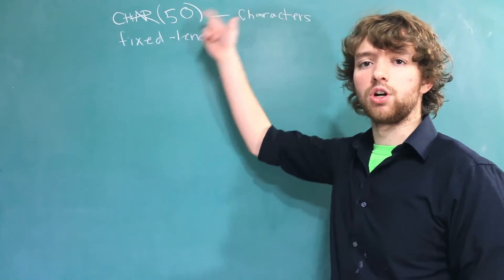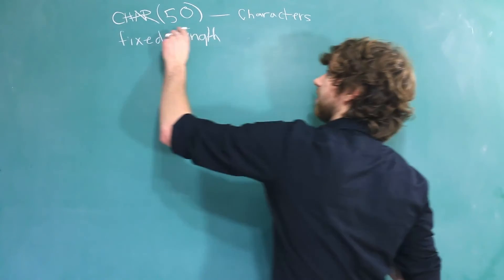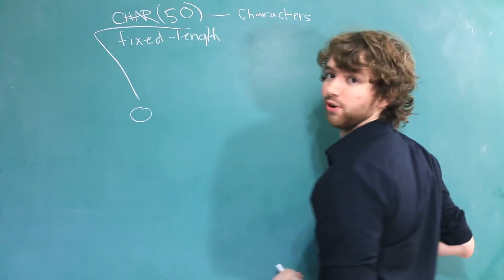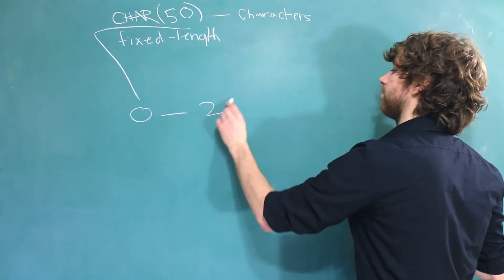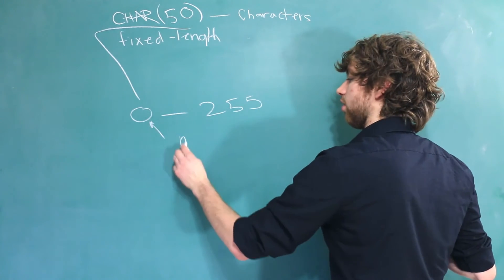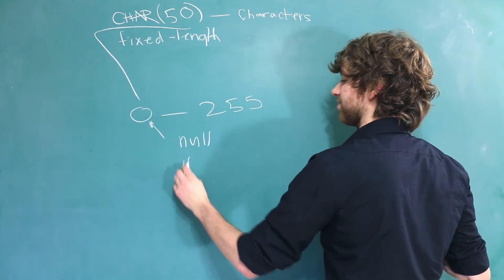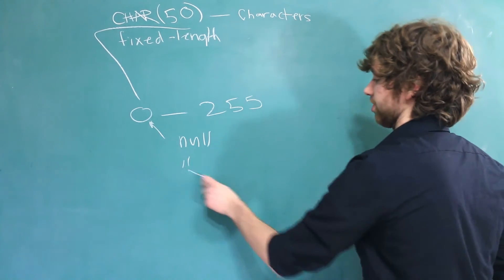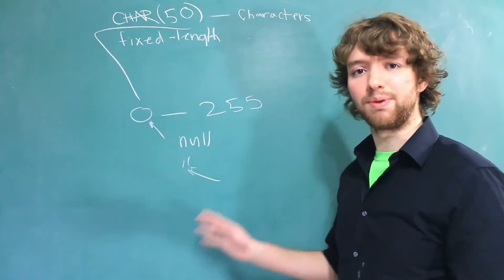Now what values are allowed in here? As of this video the lowest value you can give is actually 0. And the highest is 255. So if you had 0 the only thing that would be allowed is null and empty strings. So an empty string is just a string with no data. Not any spaces. Nothing.